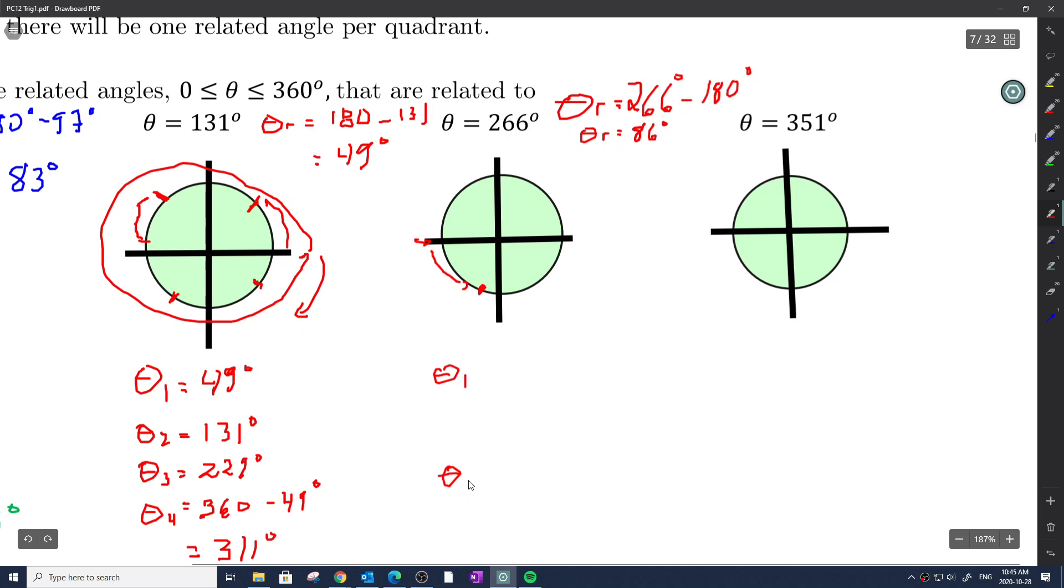Now this is all good. Theta 3, I know that my related angle is 266 degrees. My theta 1 angle, the only angle that is 86 degrees away from the closest x-axis is 86 degrees. Quadrant 2, this is where it gets tricky because it is 180 in the positive direction minus 86 away in that direction. So 180 minus 86 yields me 94 degrees. My theta 4 is going to be 360 minus 86 degrees, and it's 274 degrees.